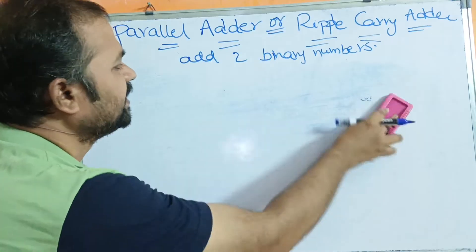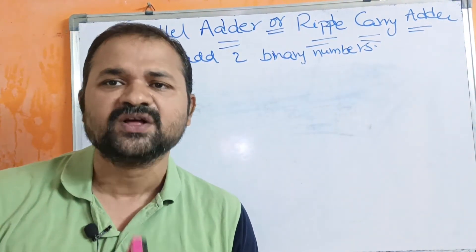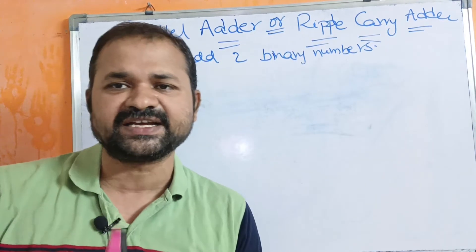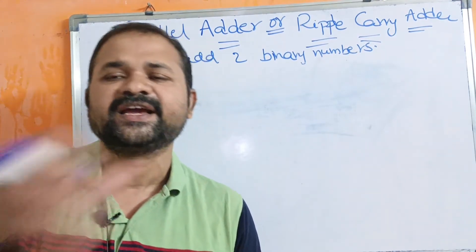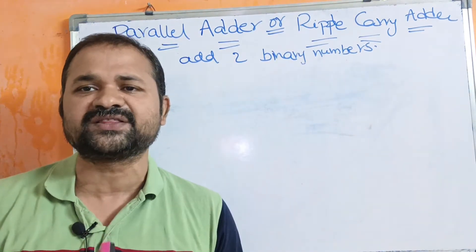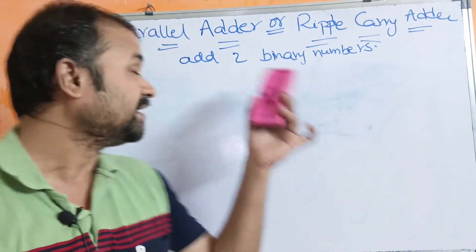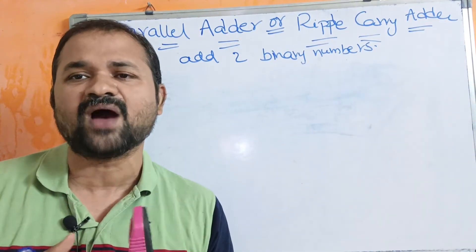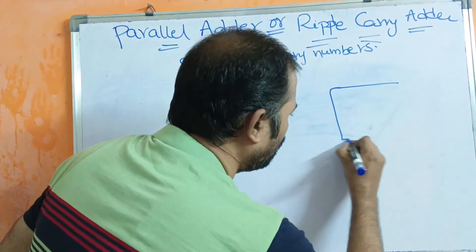A parallel adder is a collection of full adders connected in cascade, such that the output carry of one full adder is connected as input carry to the next full adder. Let us construct the diagram for a 4-bit parallel adder. Since each number contains 4 bits, we need to have 4 full adders.